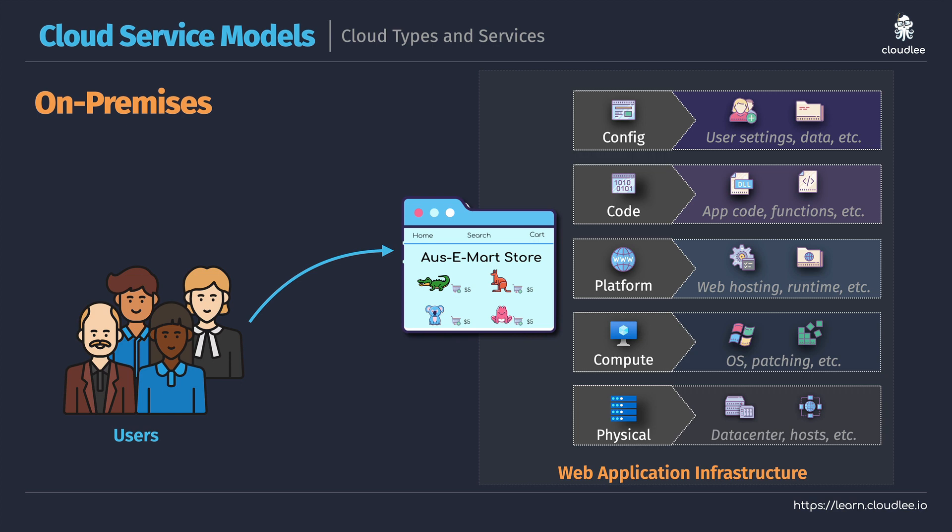These are the different components to consider when hosting a web application, and it's similar to other services too. For a file server, we have the same sorts of things to manage — we won't manage the code, but we will manage some sort of platform, like file sharing capabilities. The same applies to databases: we manage the physical, compute, and then the platform — whether that's Microsoft SQL, PostgreSQL, or any other variety of database.